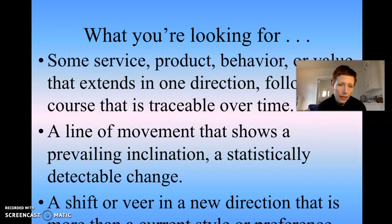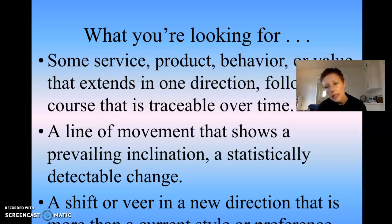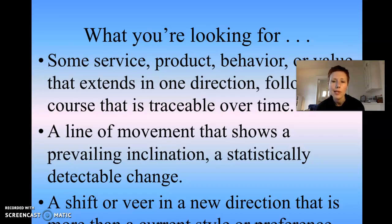So what are you looking for? Some service, product, behavior, or value that extends in one direction and follows a course that is traceable over time — more and more people are doing this, respecting this, buying this. You have to be able to see that line. There should be a prevailing line of movement with a prevailing inclination — a statistically detectable change, a shift or veer in a new direction that is more than a current style or preference.